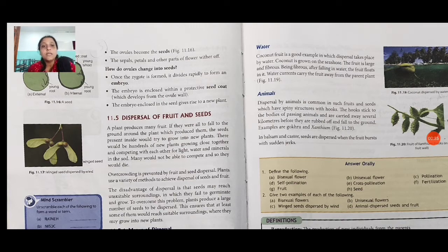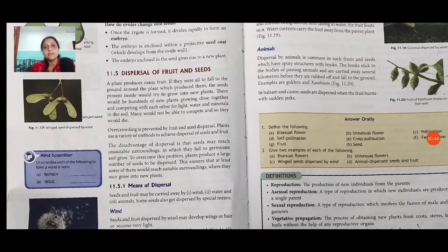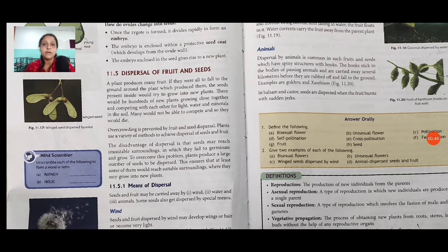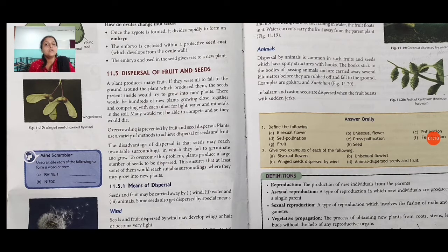Now dispersal of fruit and seeds: a plant produces many fruits. If they were all to fall to the ground around the plant, the seeds would try to grow into new plants. There would be hundreds of new plants growing close together and competing with each other for light, water, and minerals in the soil. Many would not be able to compete and so they would die. This overcrowding is prevented by fruit and seed dispersal.